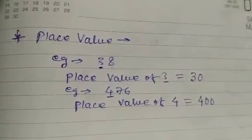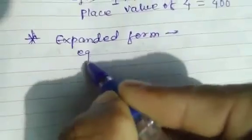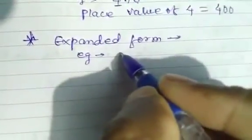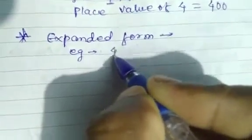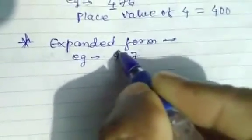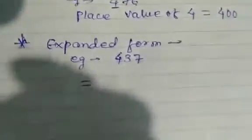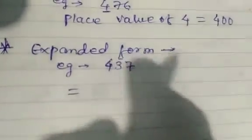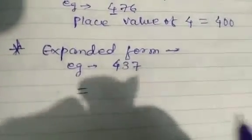Now we will read the expanded form. I am giving an example to better understand. If I ask: what is the expanded form of 437? To write the expanded form, we need to write the place value of each digit. Here is 4 — and after 4 there are 2 digits, so we write 400.